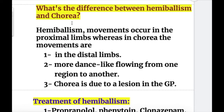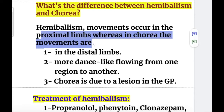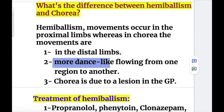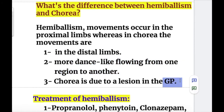The difference between hemiballism and chorea — both are hyperkinetic disorders: in hemiballism the movements occur at a proximal joint, whereas in chorea the movements are in the distal limb. Chorea has more dance-like flowing movements from one region to another, and chorea is due to a lesion in the globus pallidus whereas hemiballism is due to a lesion in the subthalamic nucleus.